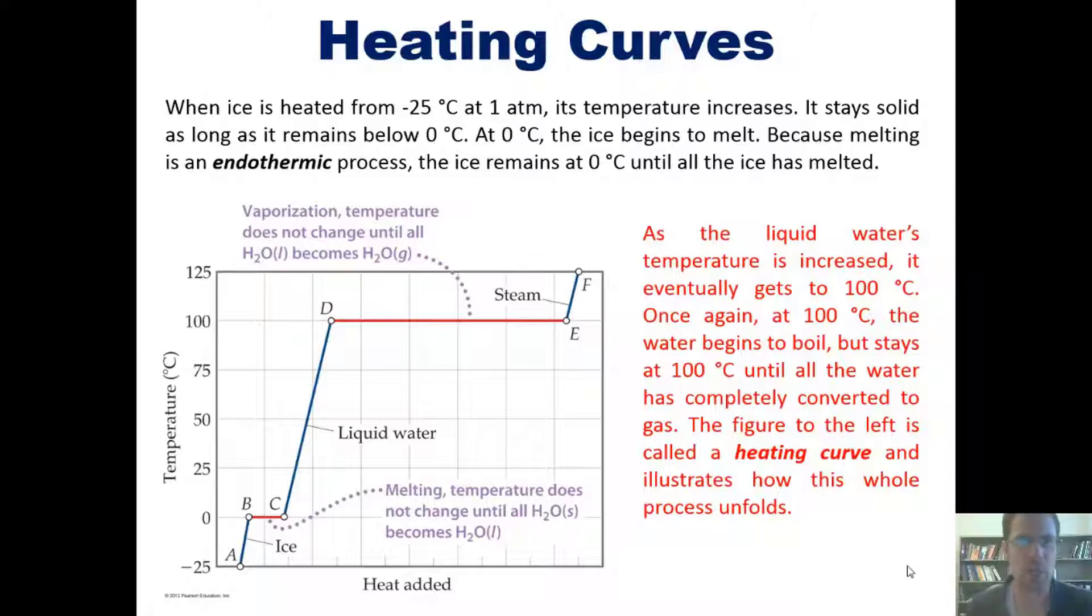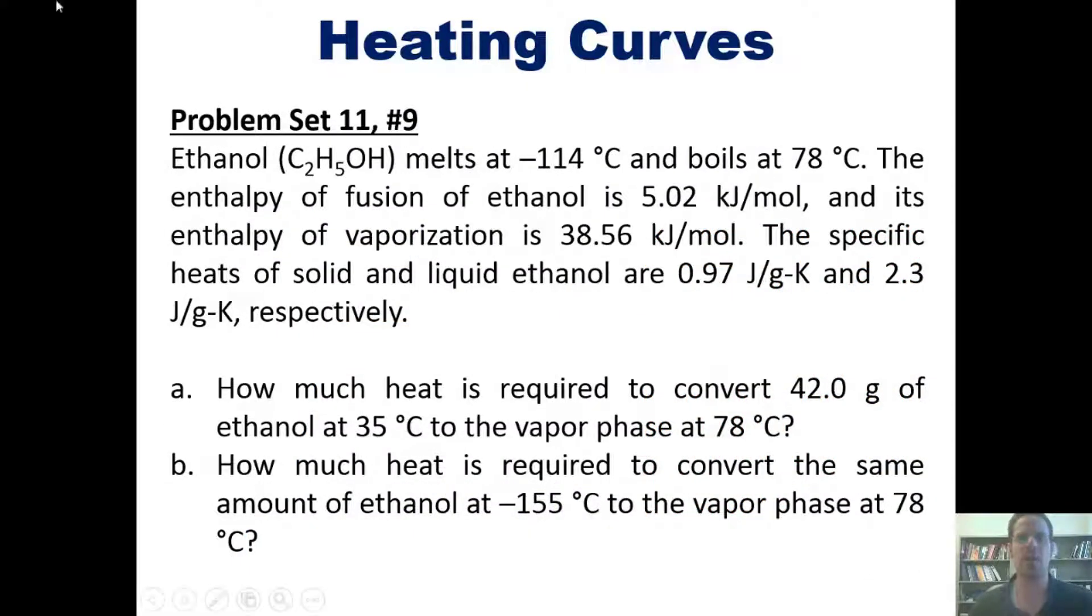This takes us to two challenging problems that at first are going to look a little bit daunting, but hopefully I can clarify. In this one, I ask, ethanol, whose structure is given here, melts at negative 114 and boils at 78. The enthalpy of fusion of ethanol is 5.02 kJ per mole, and its enthalpy of vaporization is 38.56 kJ per mole. The specific heats of solid and liquid ethanol are 0.97 joules per gram kelvin and 2.3 joules per gram kelvin, respectively.